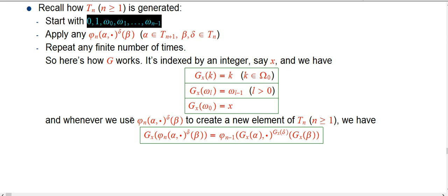Now what if we had something that was built by applying the phi functions? Here's the rule. If you collapse something that was built by using a phi n function with strength alpha, iterated delta times on beta, you just put a G everywhere.